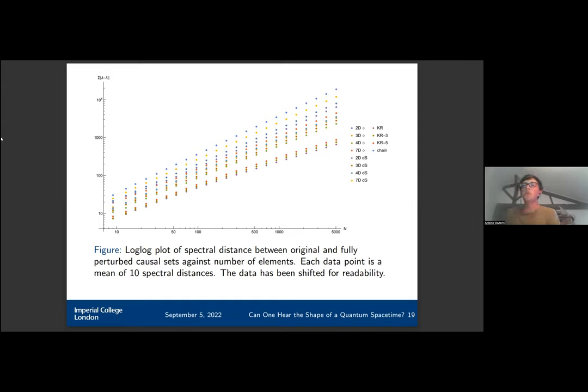Then we fully perturbed those causal sets, so we've added elements to every single element in those causal sets. And we looked at the spectral distance between the causal sets. So what we find is we get once again something that looks like a power law.